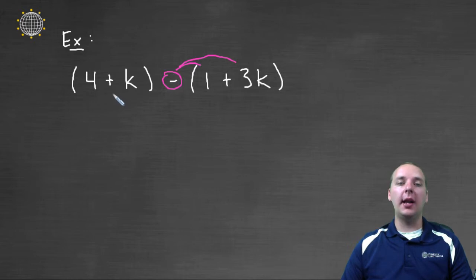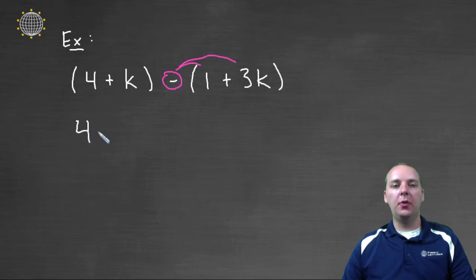The first two terms do not have a distributive property but the second terms do. So this would give us four plus k, since there is no distributive property we can just drop the parenthesis. Then we can say minus one minus three k.